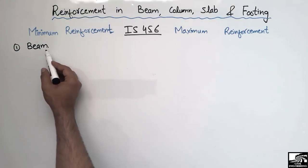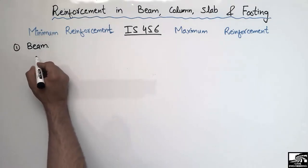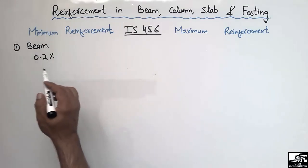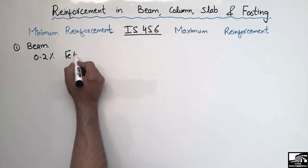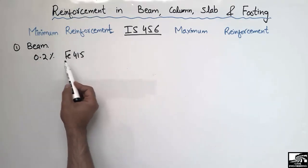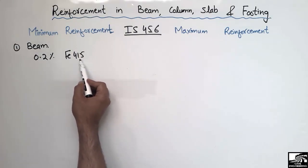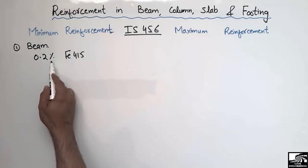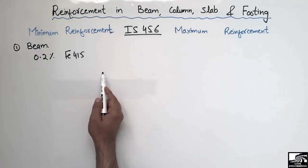Starting with the beam, the minimum reinforcement should be equal to 0.2 percent of the cross-section area of the beam. This applies if we are using Fe415 steel, meaning the yield strength of the steel bar is 415 MPa. Then we can use 0.2 percent area of reinforcement of the cross-section area of the beam.